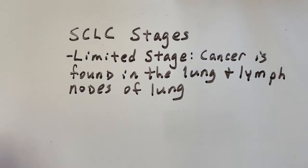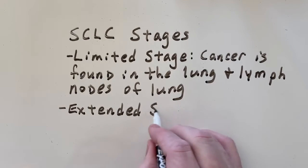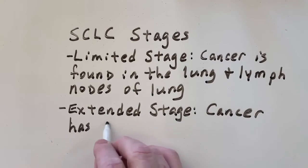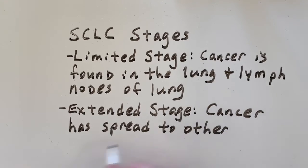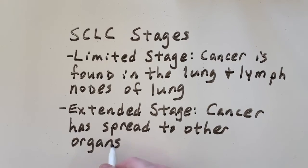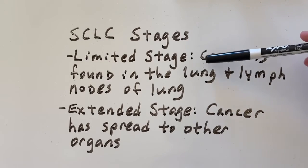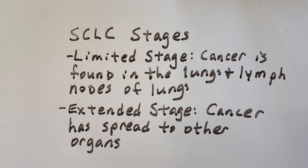In the extended stage, the cancer is no longer just in the lungs — it has spread to other organs. So to summarize: small cell carcinoma is named after its small cells seen under a microscope. There are two stages: limited, meaning it's still found in the lungs and lymph nodes in the lungs, and extended, meaning it has spread somewhere else.